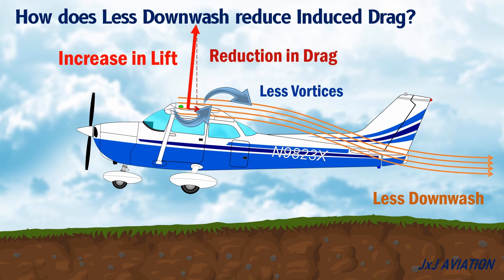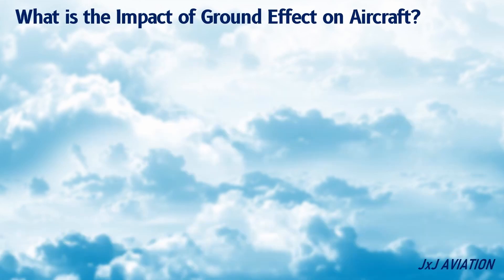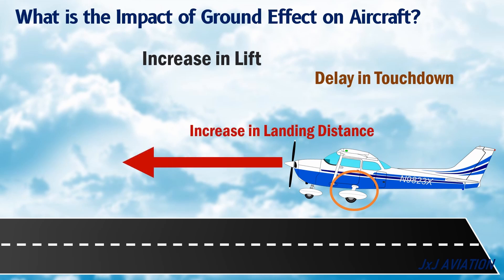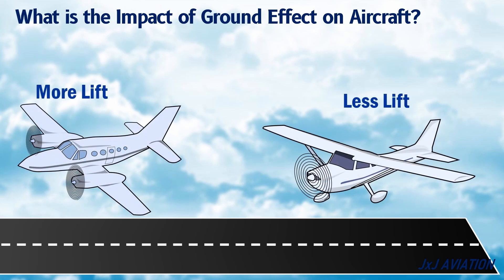This ground effect comes into play when the aircraft is about a span length above the ground. Although the concept of an increase in lift sounds good, this can have an adverse impact during landing. The ground effect can cause a delay in touchdown of the main landing gear, leading to an increase in the landing distance. This is known as runway float, where the aircraft is flying a few feet above the runway and did not land at the expected touchdown zone. The ground effect is more pronounced in low wing aircraft when compared to a high wing aircraft.